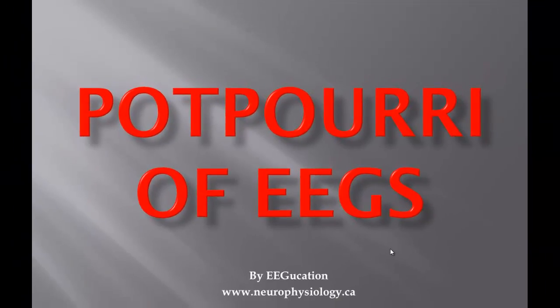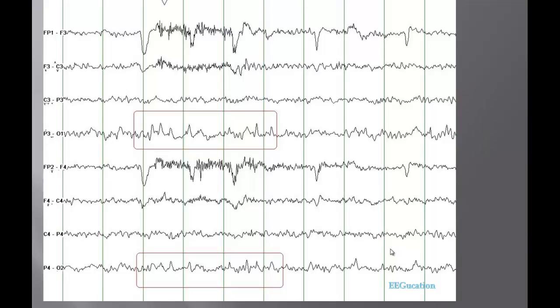Welcome back to the EEG Reading Rounds. I have some interesting EEGs for you and let's get started. So this very first EEG, you can pause the video right here and try to answer what you think of these discharges. You're looking at bipolar montage, these are electrodes recording from the left side and these are electrodes recording from the right side. What do you make of these discharges? I'll give you some clues, this person is awake.